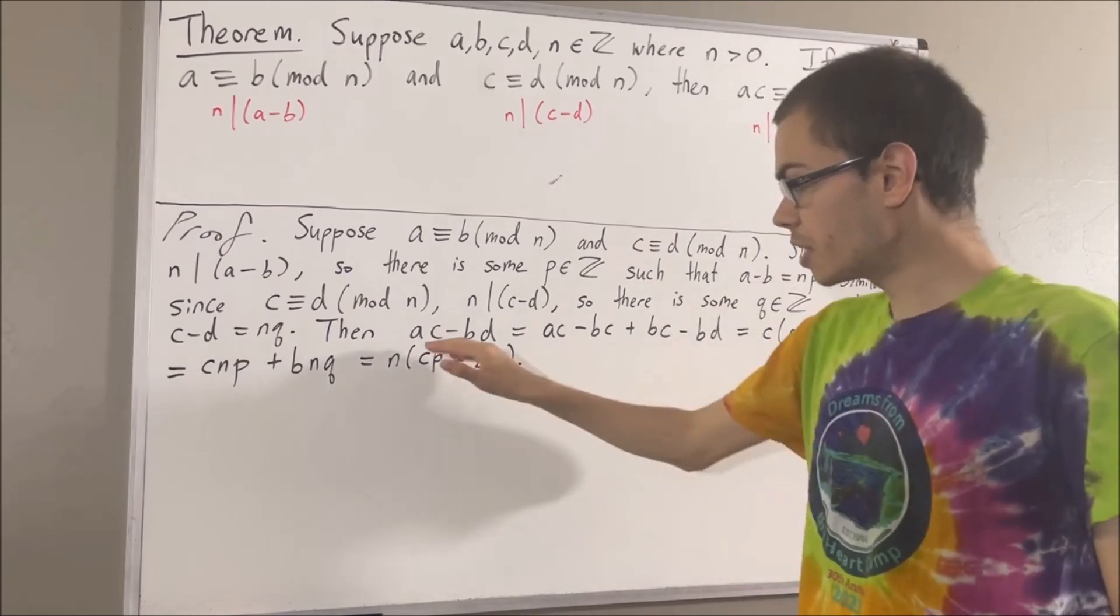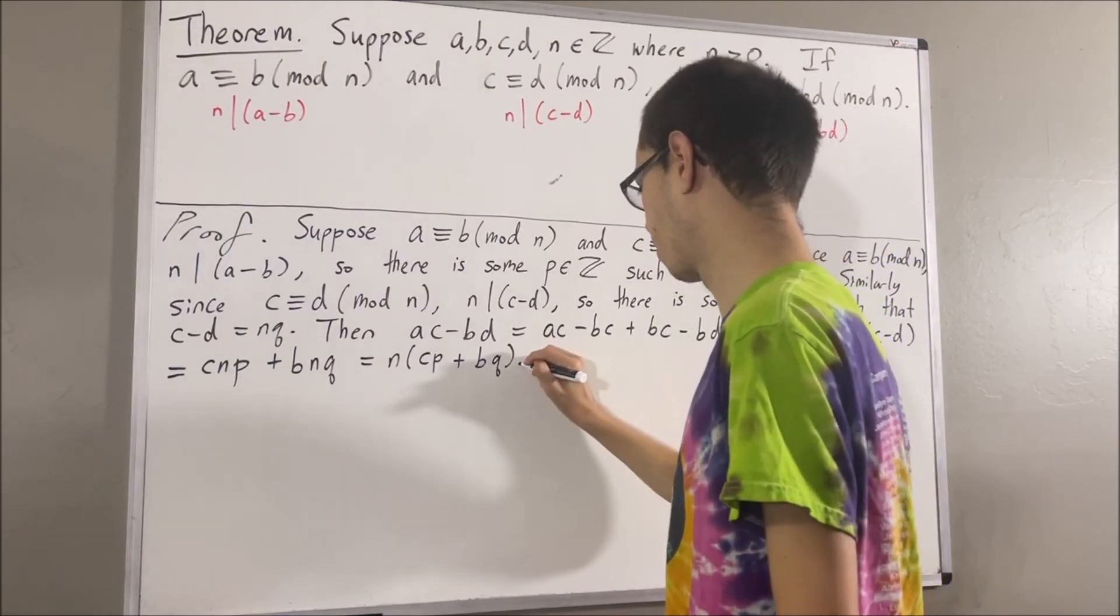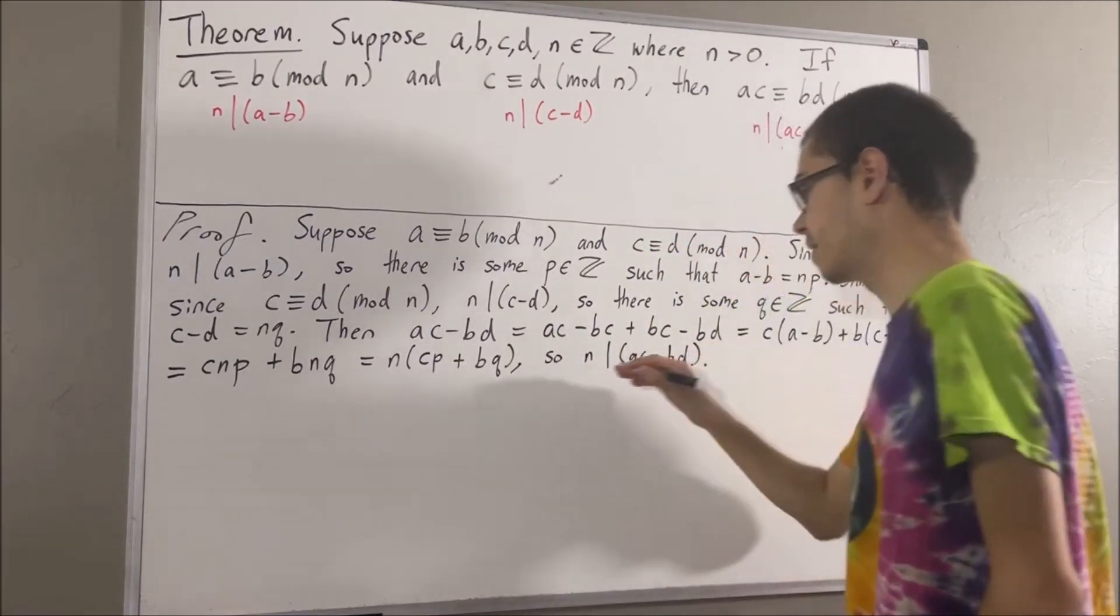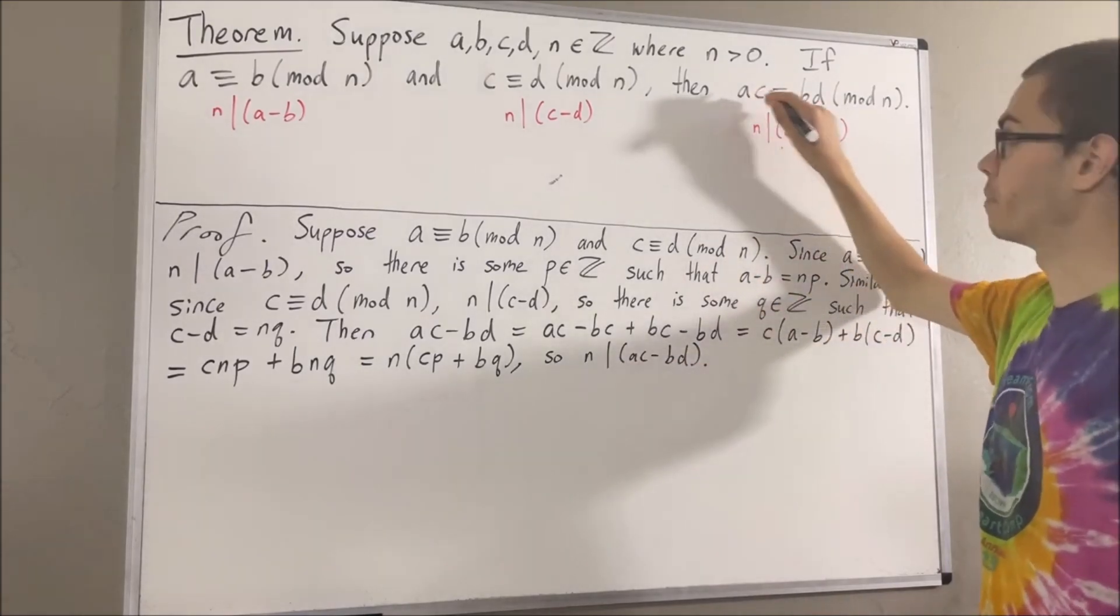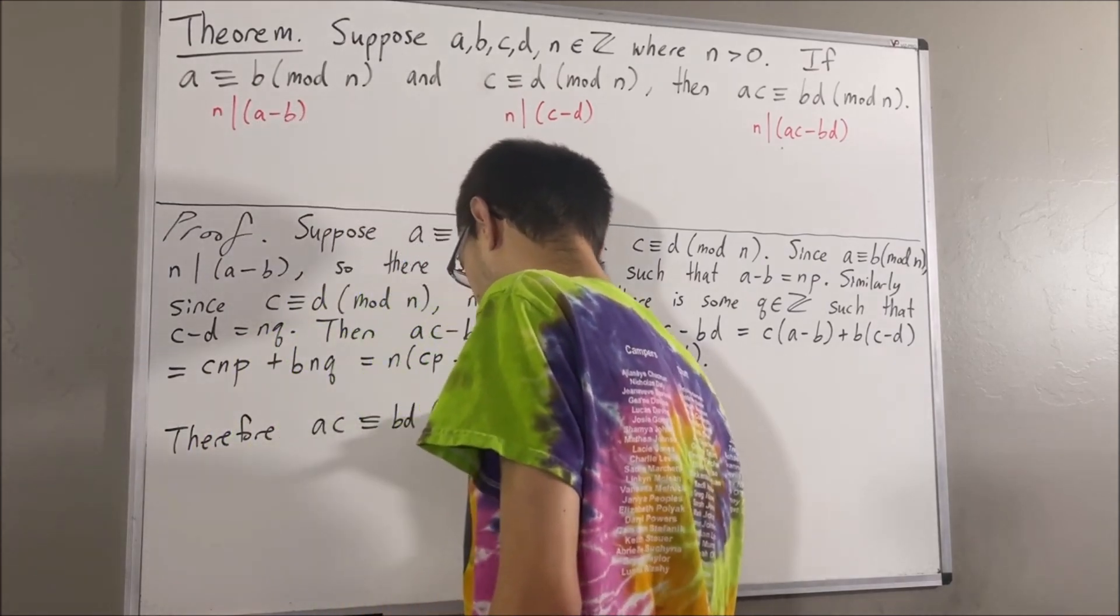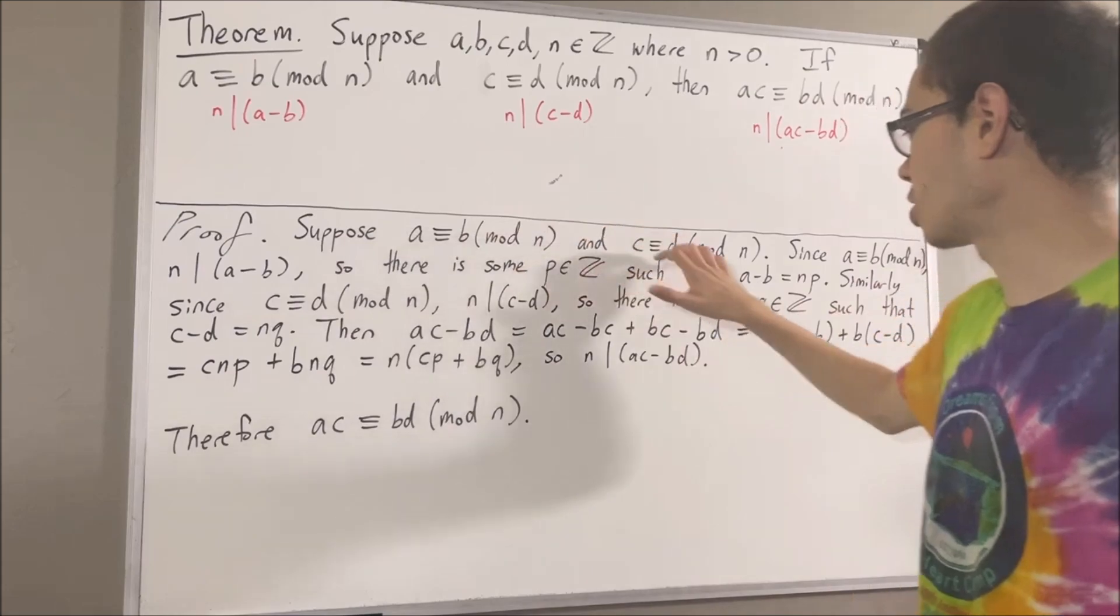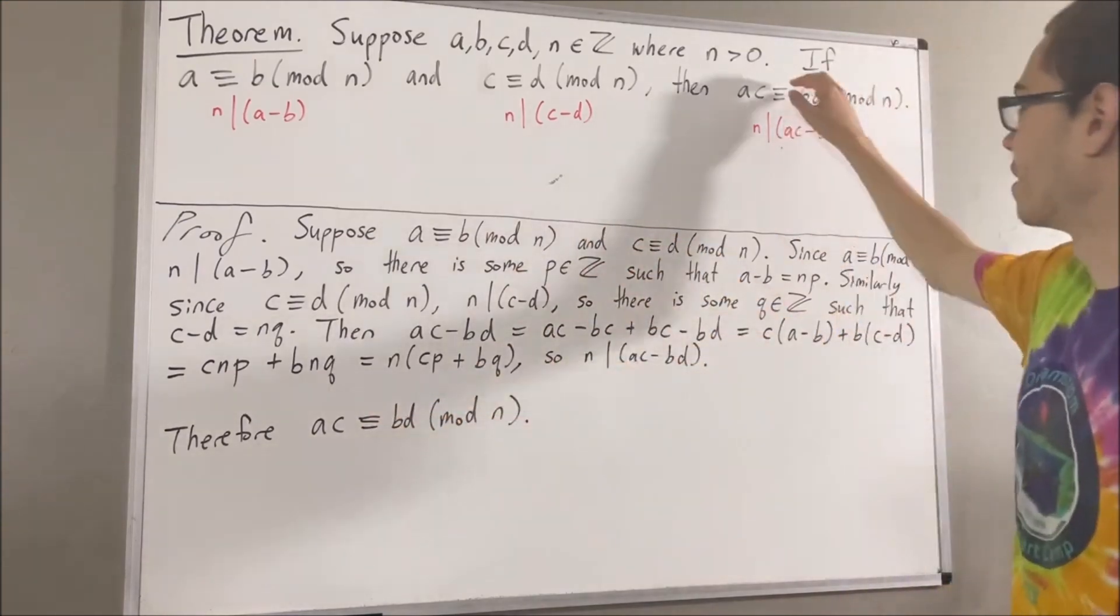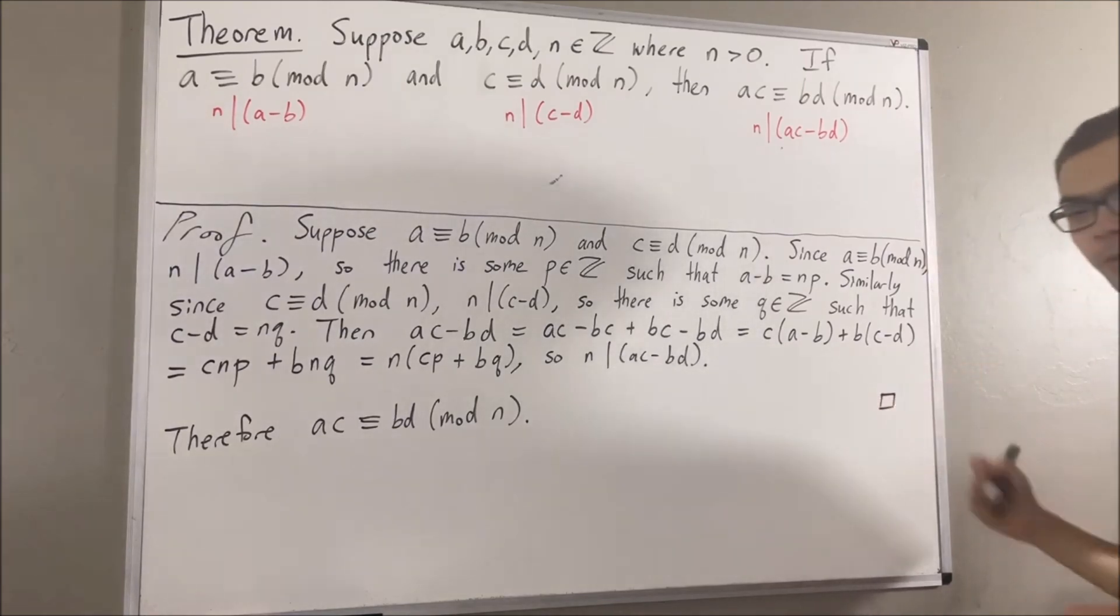So this tells us that n divides ac minus bd. And since n divides ac minus bd, this means that ac is congruent to bd modulo n. So, we have shown if these two things are true, then this is true. And that is exactly what we wanted to prove. So this completes the proof.